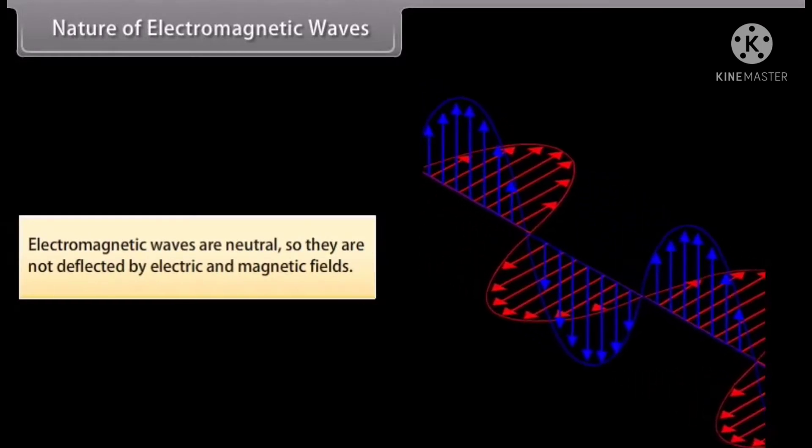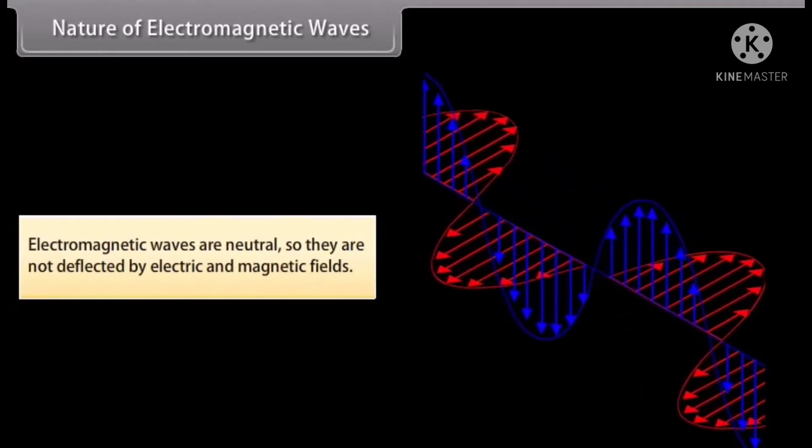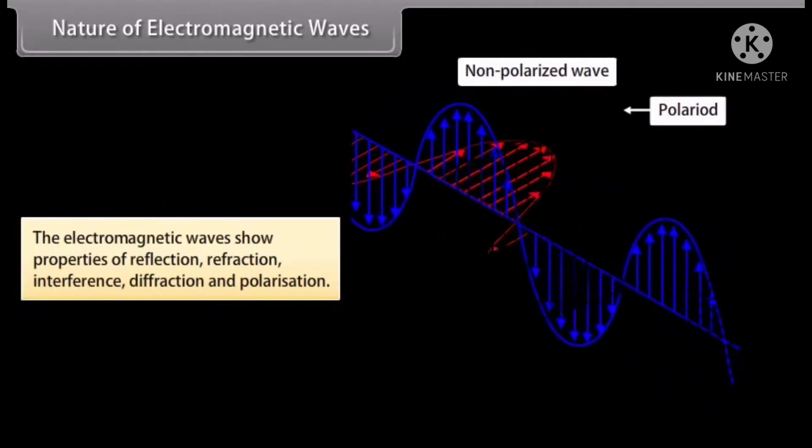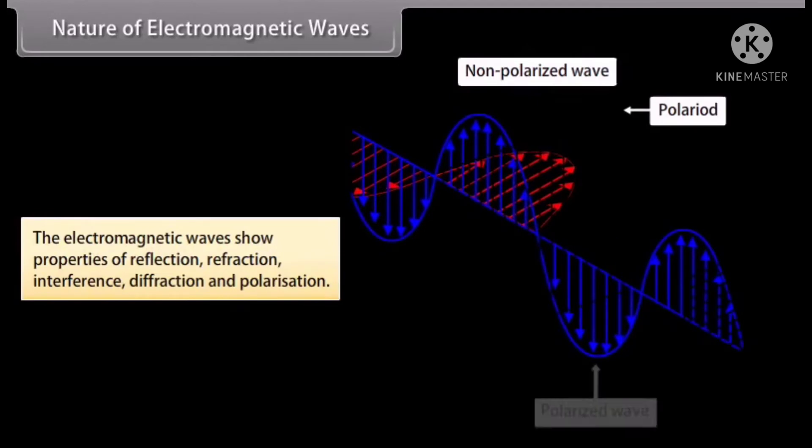Nature of electromagnetic waves: Electromagnetic waves are neutral, so they are not deflected by electric and magnetic fields. The electromagnetic waves show properties of reflection, refraction, interference, diffraction, and polarization.